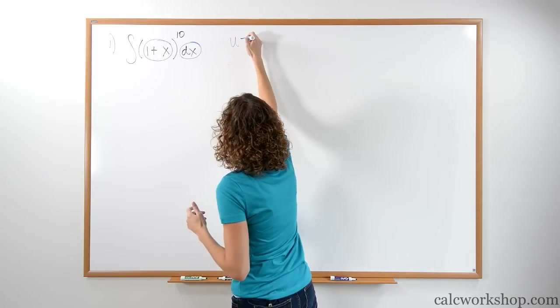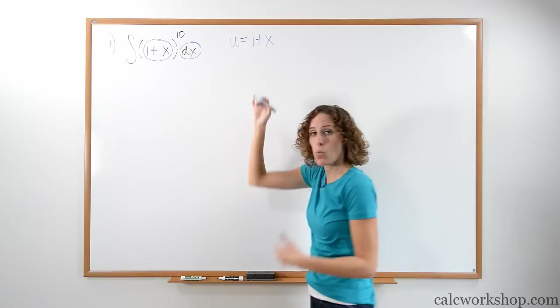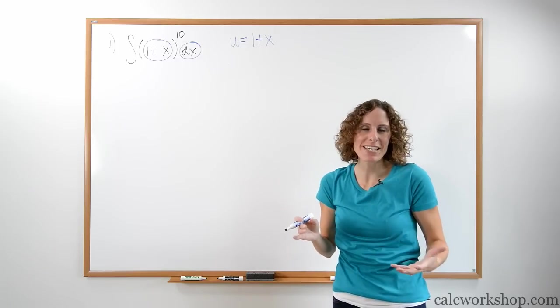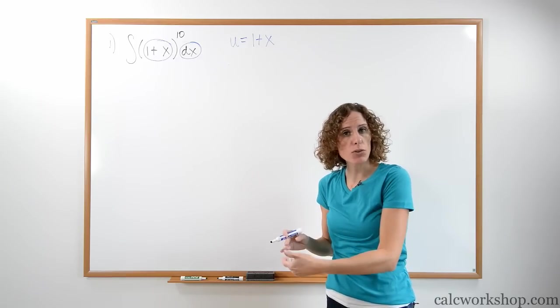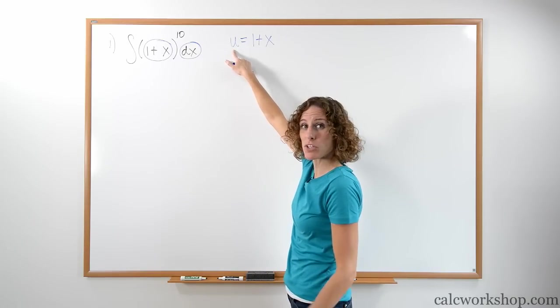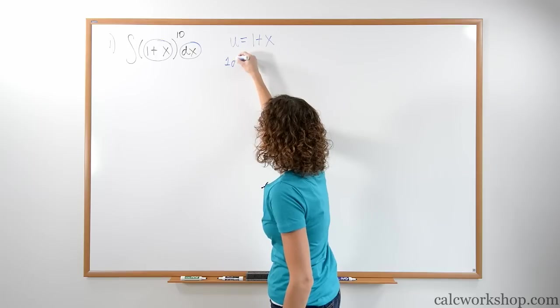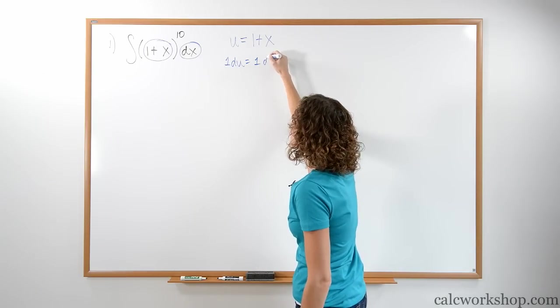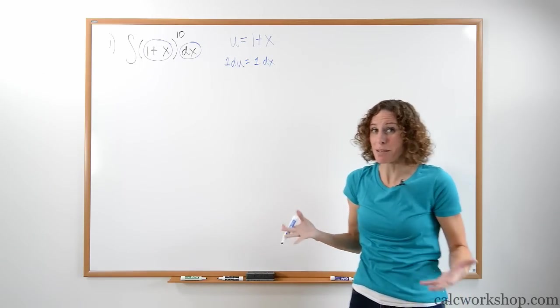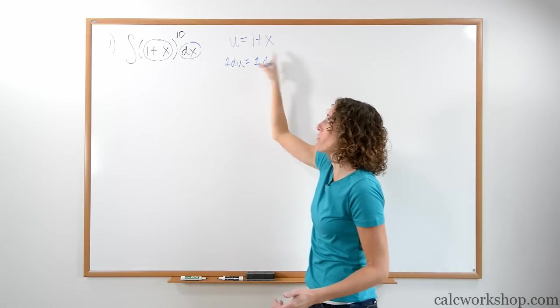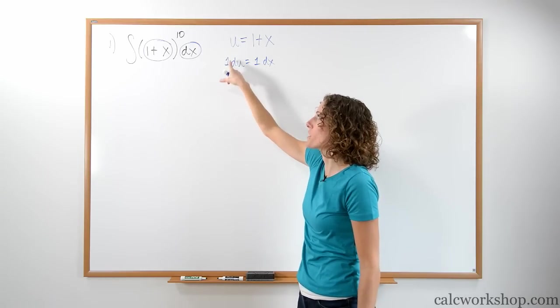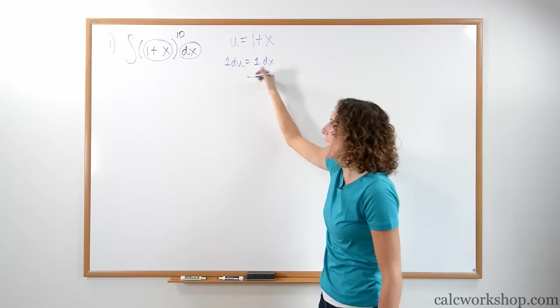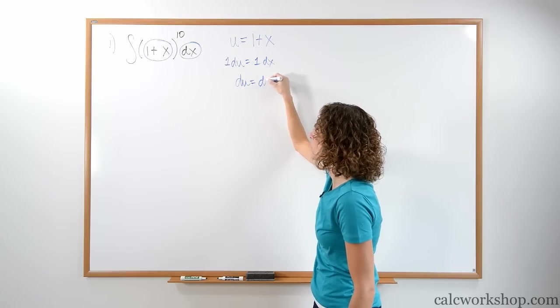So watch how we do it. We're going to say let u equal the inside piece, one plus x. So now we're replacing that part. But the question is how do I get the dx to go away? We need it to go in terms of du. So we're going to take the derivative of u, which is one du, and we're going to take the derivative of one plus x, and we get one dx. What we're doing basically is implicit differentiation for this question. We're taking the derivative of every variable with respect to what we see. So it's going to be the derivative of u, we get du. The derivative of x, we get dx, which means what I have is really du equals dx.